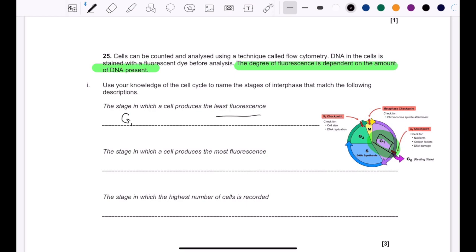And G2, well, it happens after that stage. And so the DNA is not going to run away to prophase. It's still going to be there. So G2 will also have the most fluorescence. So you can say G2 or S phase.